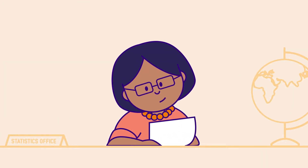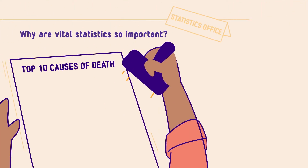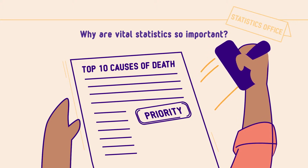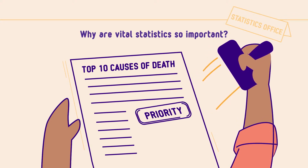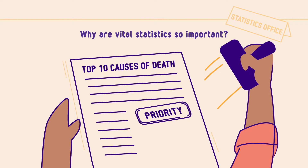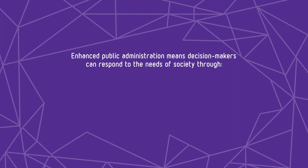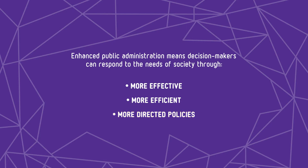Vital statistics are the main way governments obtain better information about their population, which helps leaders make more informed decisions about how to distribute resources and how to implement policies across multiple sectors. Improved data means decision makers have the information they need to respond to the needs of society through more effective, efficient and directed policies at national and local levels.